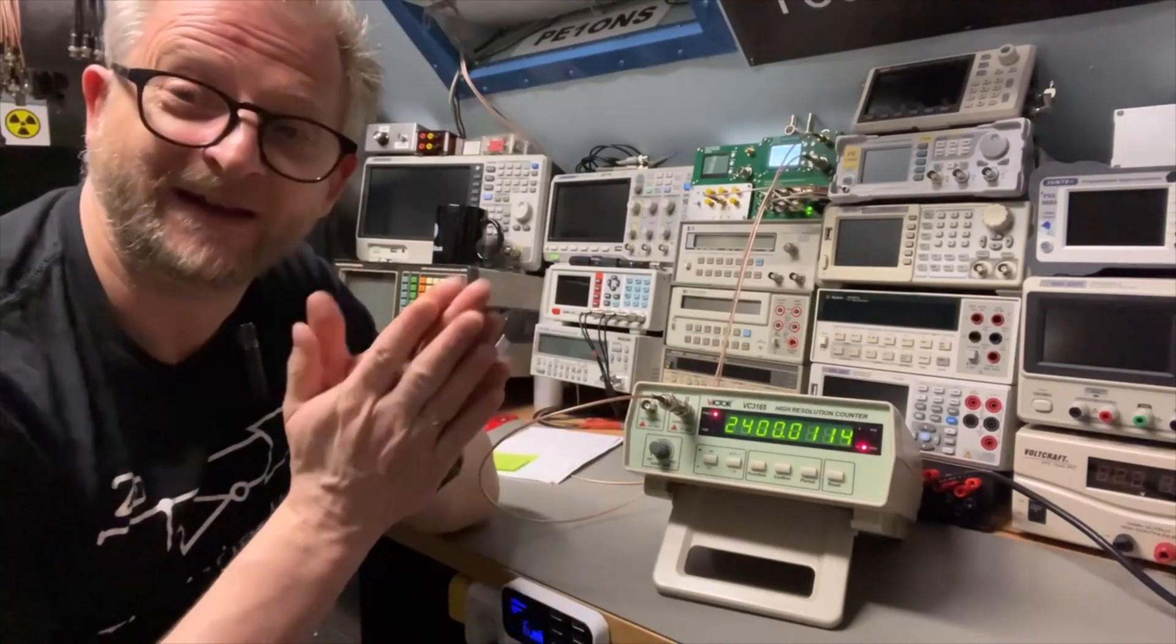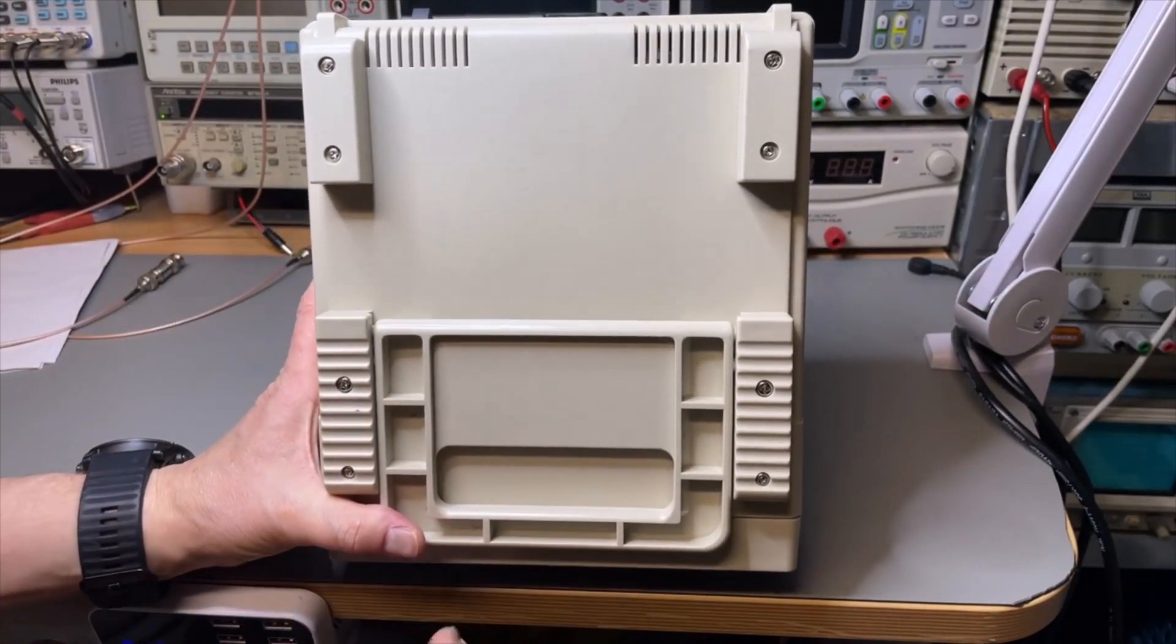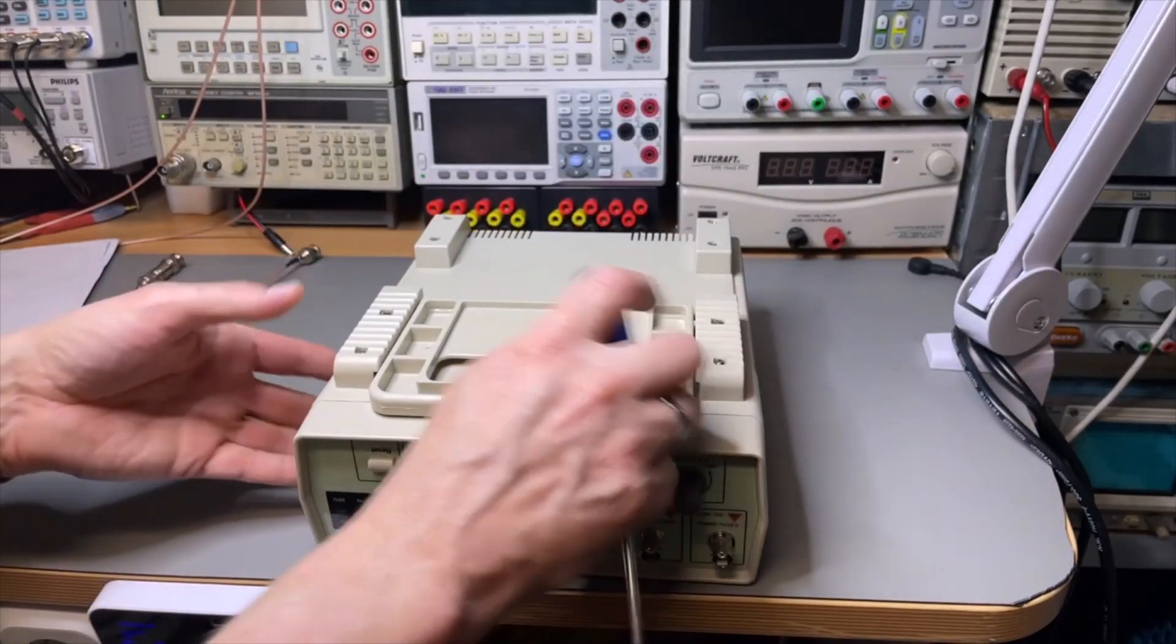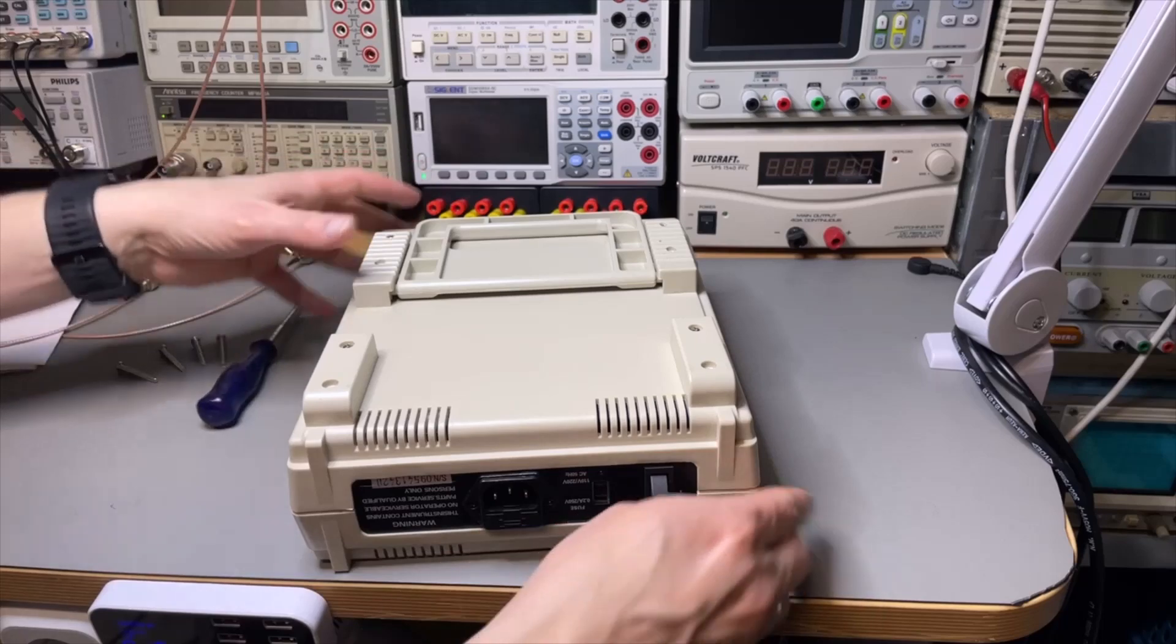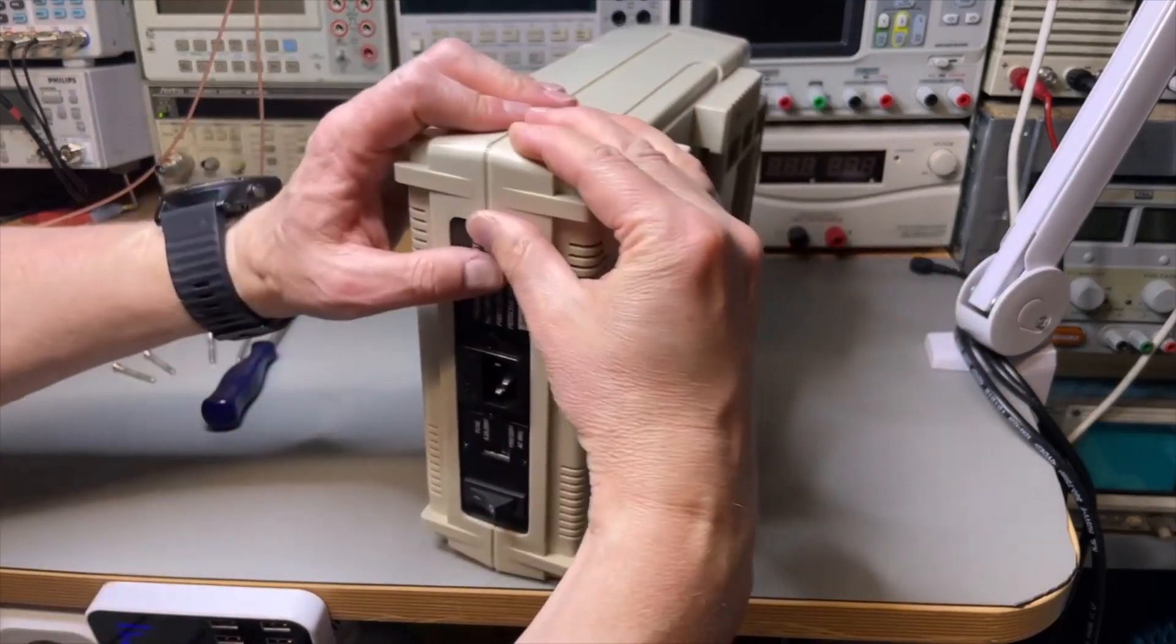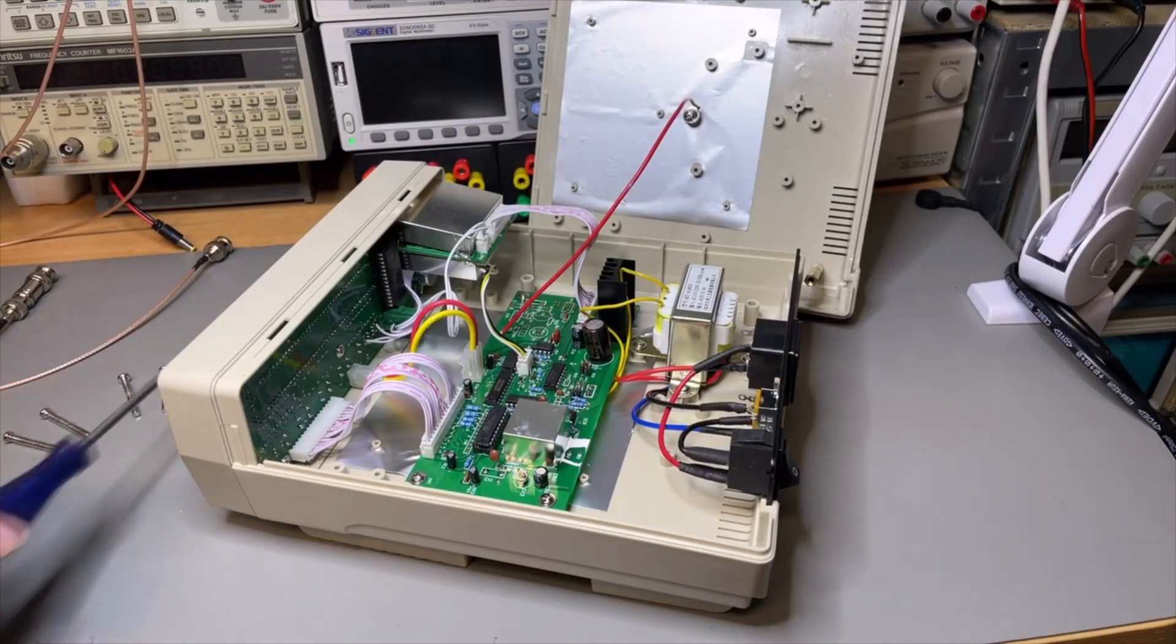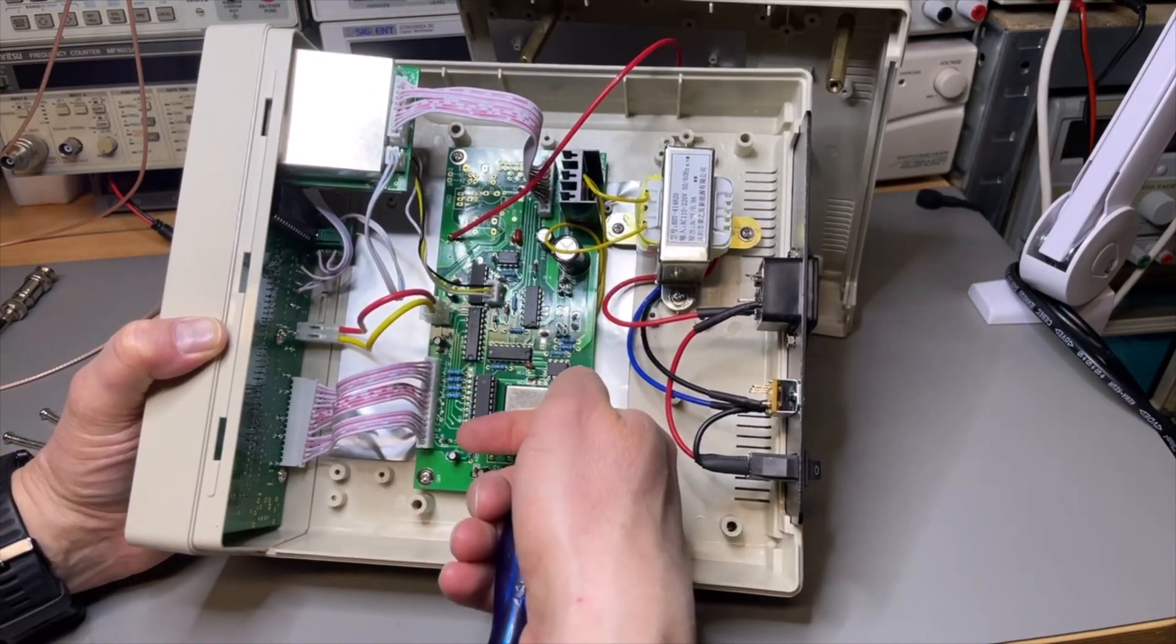Now we're going to open it. Well there are a few screws in the bottom, but there are only four big ones. The small ones we can just leave in because that is for the feet. So I'm only going to do the bigger ones. It's open. I think here we have this little can. This is probably the oven. It's a little bit warm.